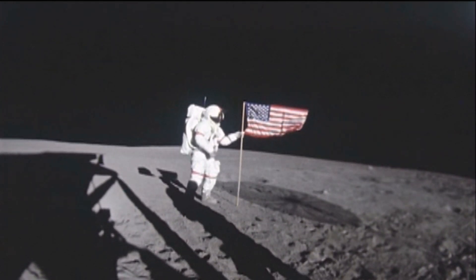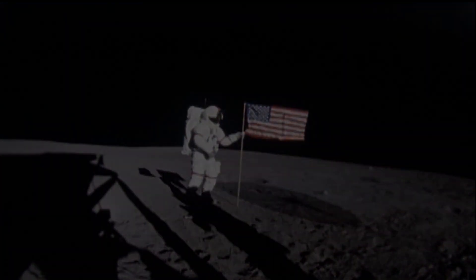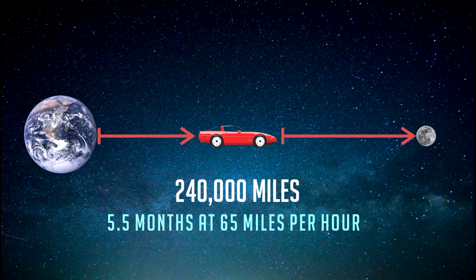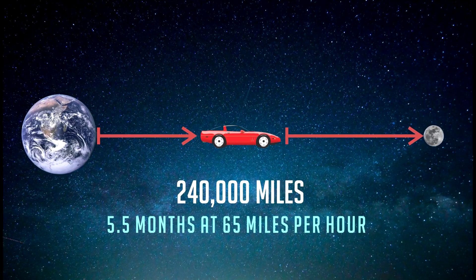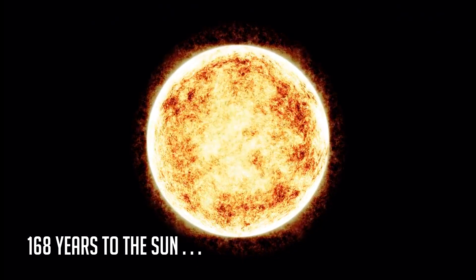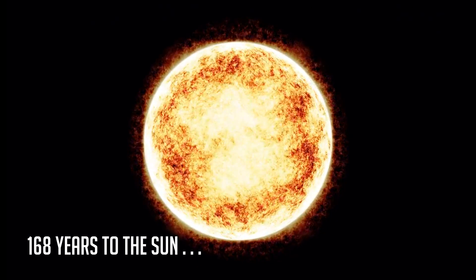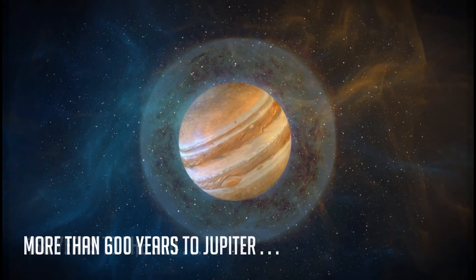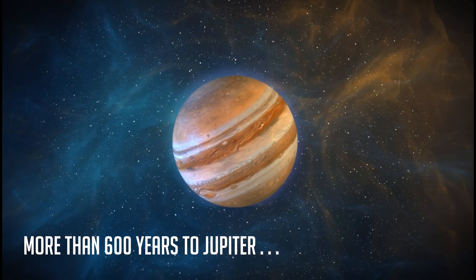So, let's go to the moon, on the freeway. Driving to the moon at 65 miles an hour would take approximately five and a half months. A drive at 65 to our sun would take a staggering 168 years, and a trip to Jupiter, just over 600.